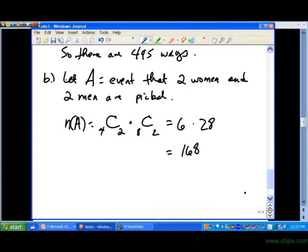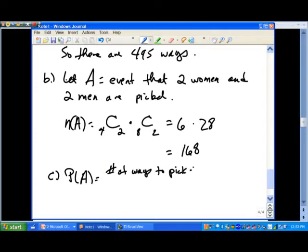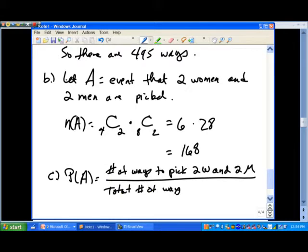So now we want to find, in part C, the probability of A. So let's think about how we want to do that. We want to take the number of ways to pick two women and two men, and then divide that by the total number of ways to pick a subcommittee of four.